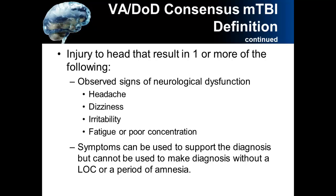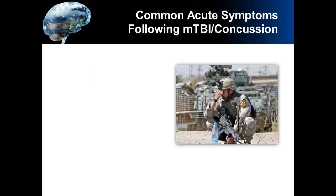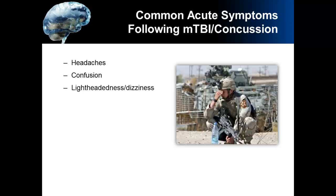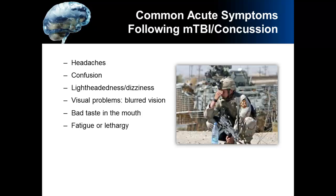So what are some of the common manifestations or symptoms of a concussion or mild traumatic brain injury? This list identifies the most common manifestations or symptoms of this type of injury. They include headaches, confusion, lightheadedness or dizziness, visual problems such as blurred vision, a bad taste in the mouth, fatigue or lethargy — lethargy is feeling tired all the time — and sleep disturbances.